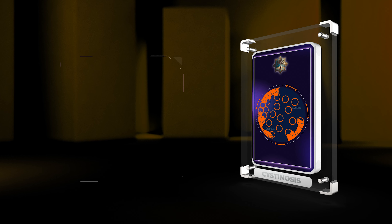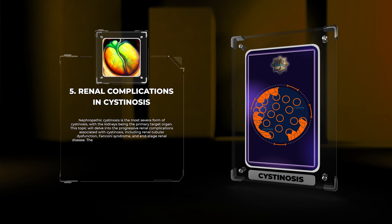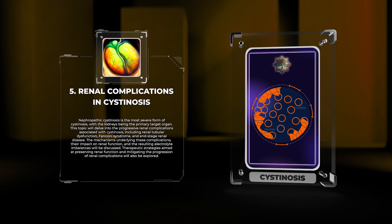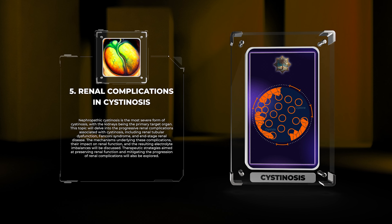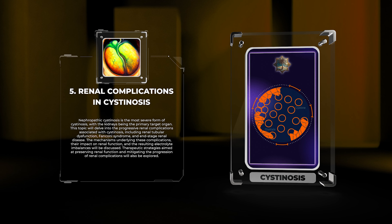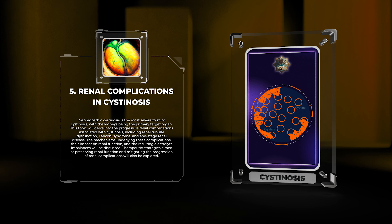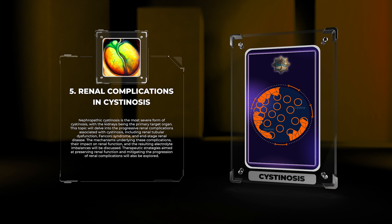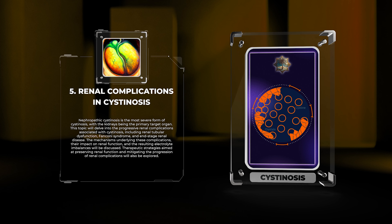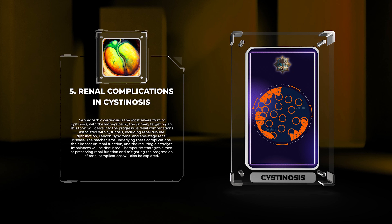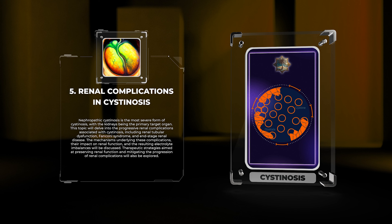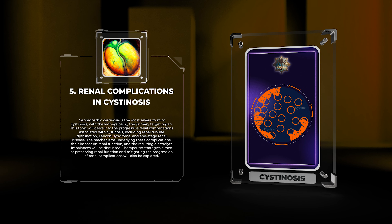Nephropathic Cystenosis is the most severe form of Cystenosis, with the kidneys being the primary target organ. This topic will delve into the progressive renal complications associated with Cystenosis, including renal tubular dysfunction, Fanconi syndrome, and end-stage renal disease. The mechanisms underlying these complications, their impact on renal function, and the resulting electrolyte imbalances will be discussed. Therapeutic strategies aimed at preserving renal function and mitigating the progression of renal complications will also be explored.